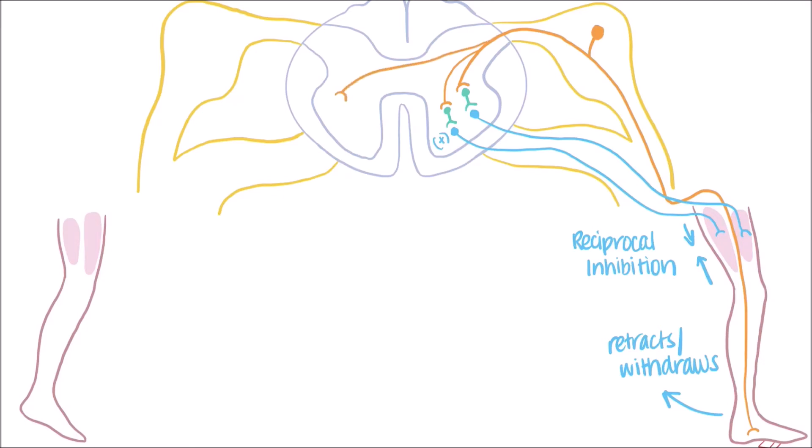This time, however, one interneuron excites the alpha motor neuron going to the extensor muscles, and the other inhibits the neuron going to the flexor muscles.